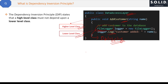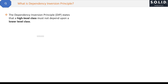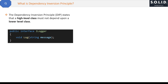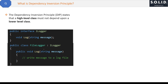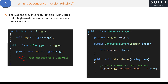To implement DIP, first we create an ILogger interface that declares the log method, and a FileLogger class that implements ILogger and provides its own implementation of the log method. Then in the DataAccessLayer, we inject an ILogger object as a constructor parameter and store it in a private field. When the AddCustomer method is called, it uses the ILogger object to log a message instead of directly creating a FileLogger. Now DataAccessLayer is not dependent on the low-level FileLogger class.